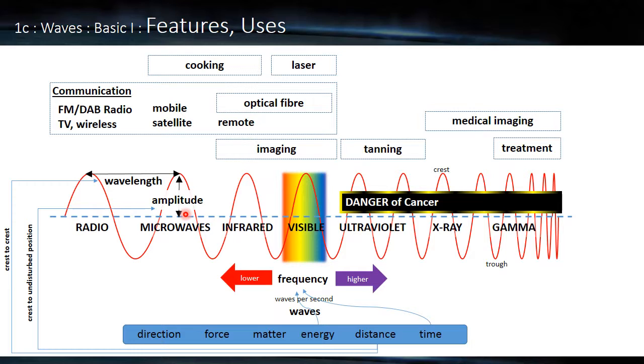Then we've also got the amplitude which is the height of the wave. Now this is from this dotted line in the middle, the undisturbed position. A very common mistake is to think that it's this total height, and examiners love to ask you that, so make sure you understand that it's just this bit here.